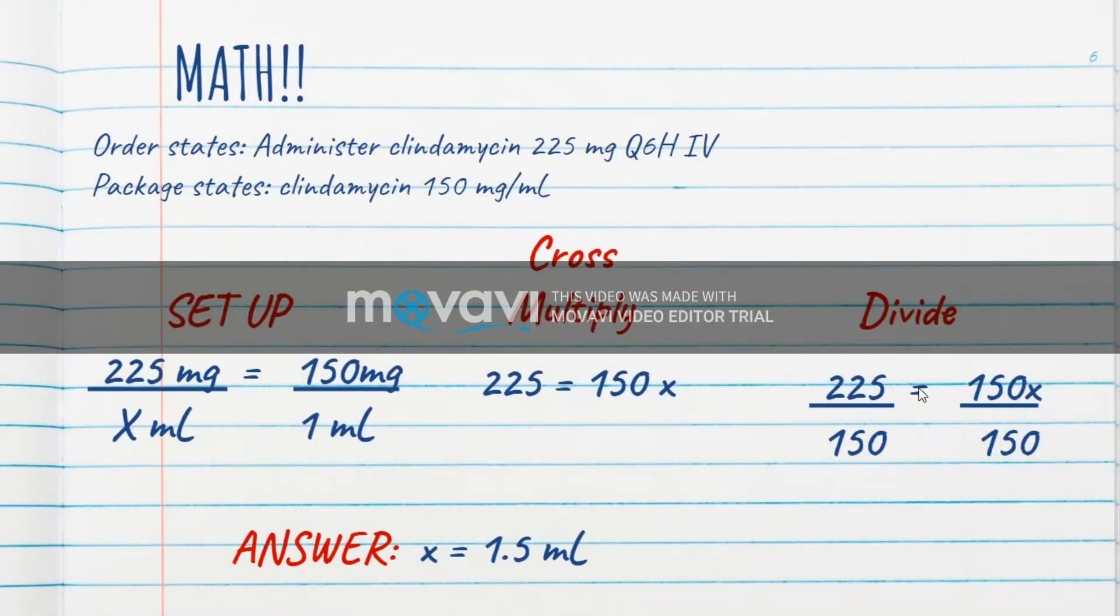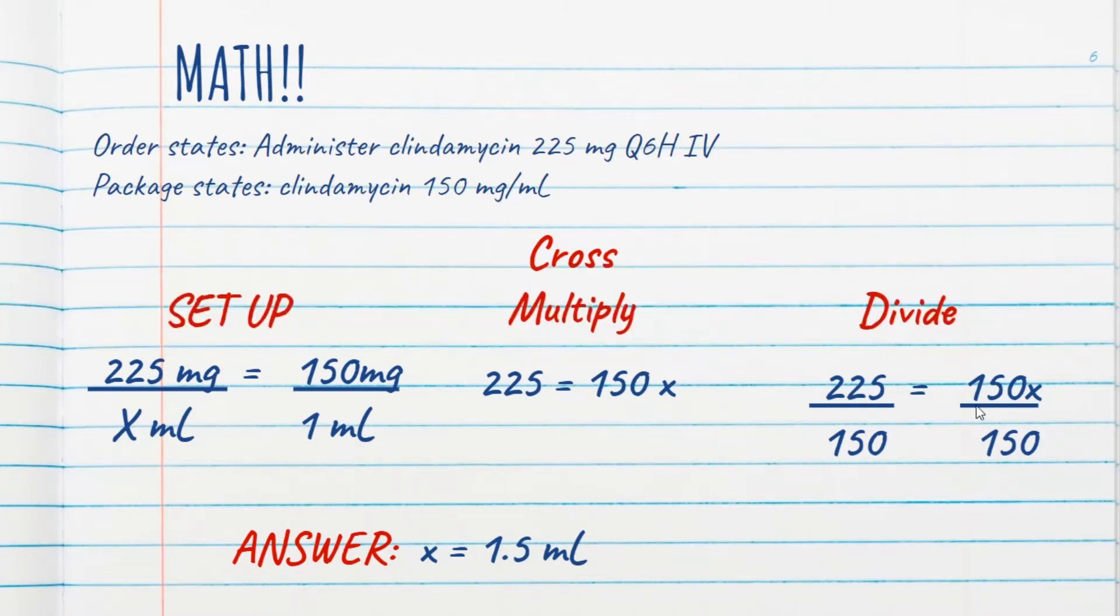So in order to get that x isolated by itself, we have to divide by 150 on both sides of the equation, and we get 1.5 mLs as an answer.